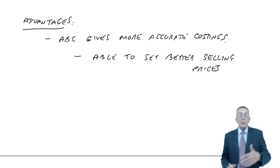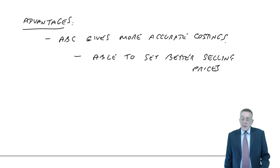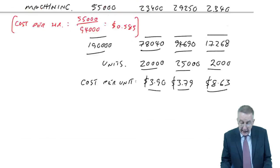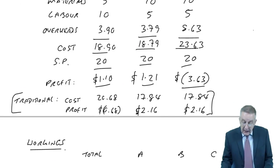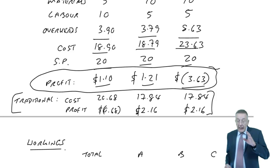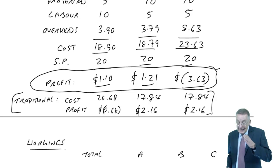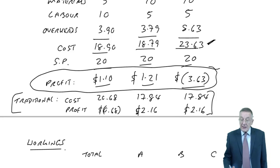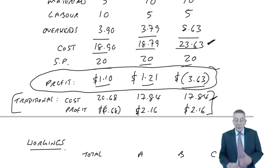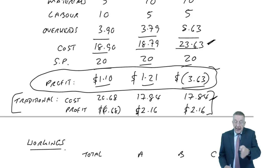You normally want to charge more than cost. So if we get the cost per unit correct, then we know the selling price has to be higher. Under activity-based costing, it's product C that's the problem — the cost is 2,363, so we need to be charging more than that. Whereas under traditional costing, the cost always seemed to be 1,784, so you'd charge a lot less — which would be silly. In activity-based, A and B are okay, they are profitable. It's C where we need to up the price.